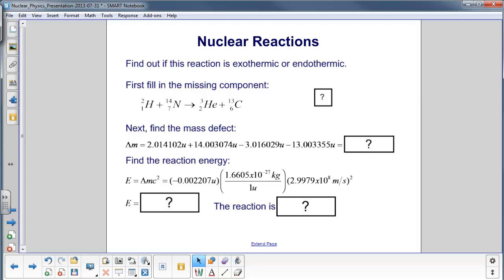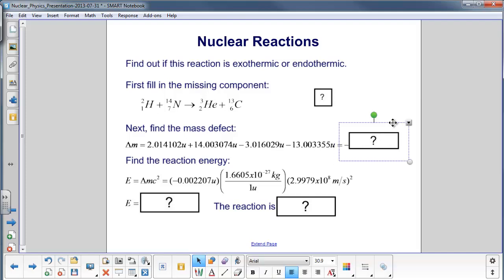Now we're going to find the mass defect. We take the atomic mass units of the reactants over here, and notice we take them out to many decimal places, because that's what we need in these types of problems, because even small numbers make big differences. Here's the mass of deuterium in atomic mass units, here's nitrogen, then we subtract away the atomic mass units of the products. So here's helium, and here is carbon. We do the math, and we get a negative 0.002207 atomic mass units.